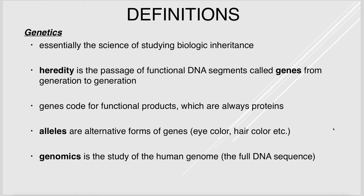For genes, there are different forms called alleles. Alleles are alternative forms of genes. For example, we have genes for eye color, but there are different eye colors because there are different forms of the eye color genes. Genomics is the study of the entire human genome — the full DNA sequence.